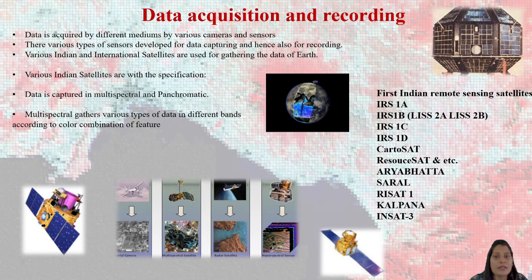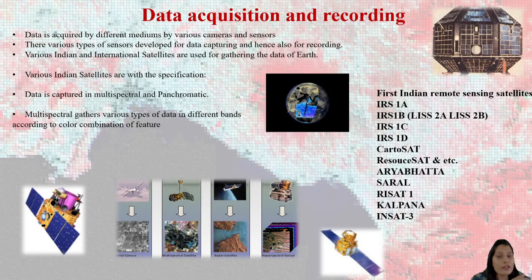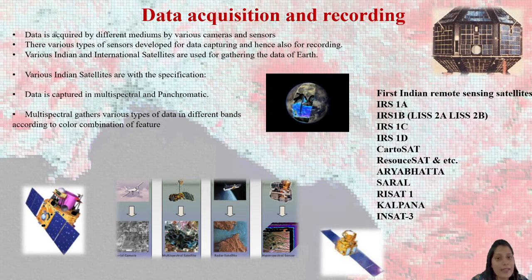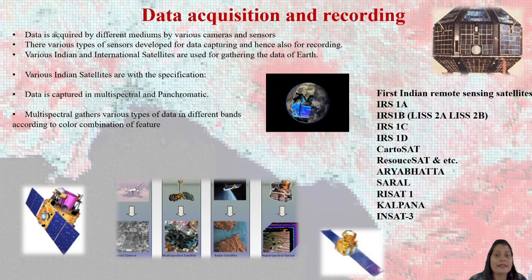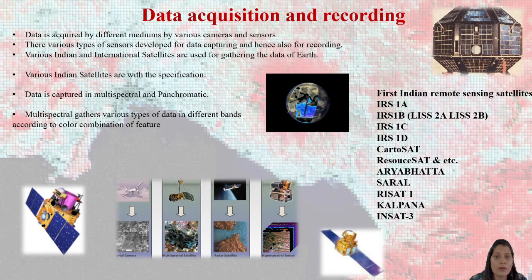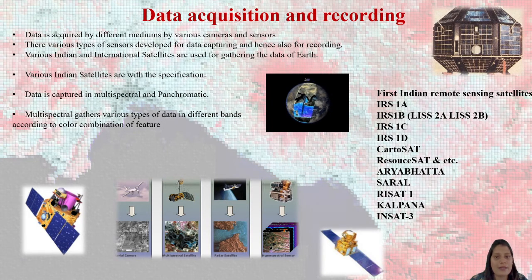You can see in the image how a sensor revolves around the earth's surface and captures energy. As the sensor revolves, it captures the energy — this is how data acquisition is possible. In a technical sense, data is acquired through different mediums by various cameras and sensors.